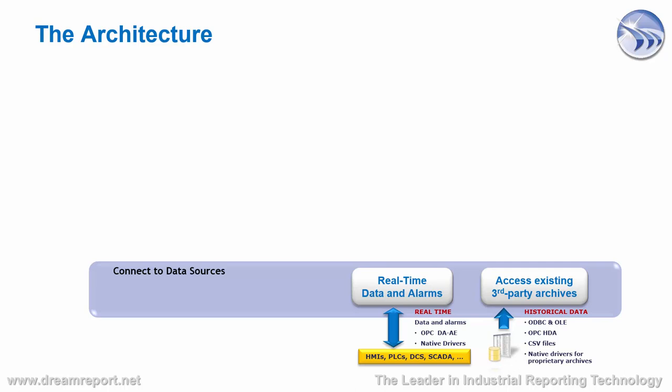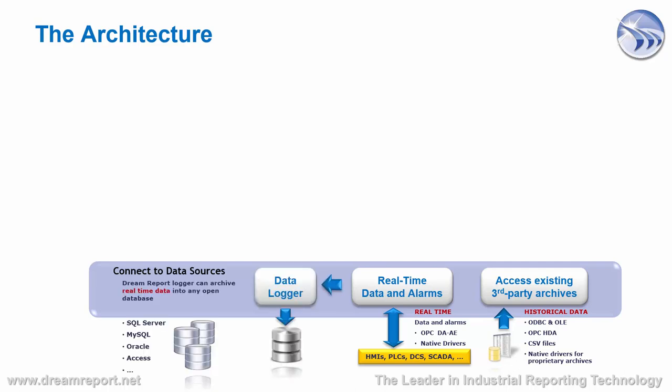The other class of data sources we work with are real-time data and alarm data sources. In this case, we're connecting to a real-time data stream, which we can then report on the current values at time of report generation. Additionally, DreamReport has a built-in data logger, in which you can take data from any real-time data source and log it to the database of your choice — from Microsoft SQL, MySQL, Oracle, Access, or any other database you may wish to use. DreamReport allows you to set up logging groups to record data under different conditions, under different time periods, and on different schedules.